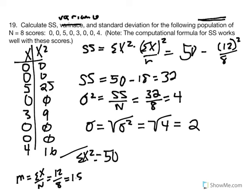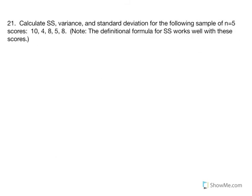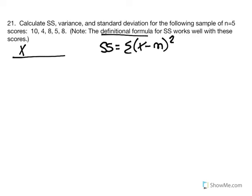Standard deviation represents, on average, how much these scores in this distribution deviate from the mean of the distribution, which was calculated as 1.5. Number 21: we're asked to calculate the sum of squared deviations, variance, and standard deviation for a sample with 5 scores using the definitional formula. The equation for SS using the definitional formula is the sum of (x minus the mean) squared — we calculate the deviation between every score and the mean, square all those deviations, and take the summation.